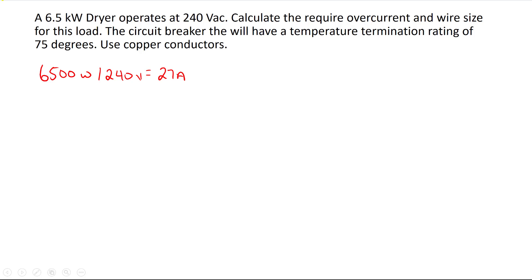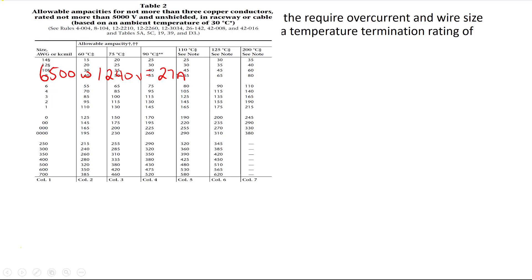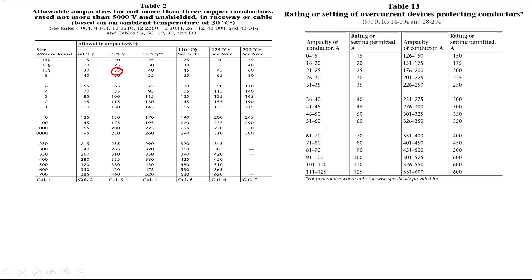Now I can take my 27 amps and select a wire size. I go to Table 2. In the 75-degree column, number 10 is good for 35 amps, so it will more than handle the 27-amp load. Now I go to Table 13, which tells me that if I have a conductor good for 35 amps, I can put it on a 35-amp breaker. However, looking at Table 2 there is a small 'S' symbol that takes me to Rule 14-104, which is also noted at the top of Table 13.